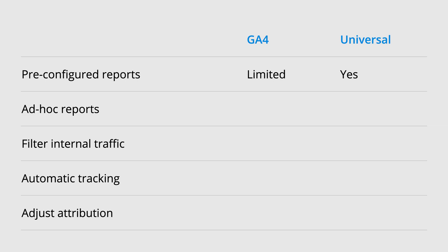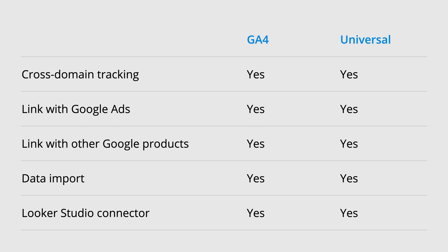Before we wrap up, let's cover key differences between GA4 and Universal Analytics. GA4 has a limited number of pre-configured reports, while Universal Analytics has a wider range of standard reports. GA4 introduces more ad-hoc reporting options to meet your needs. You can filter out internal traffic in both versions of Analytics. GA4 includes automatic tracking of important actions, while Universal Analytics doesn't. And you can adjust the attribution model used for the standard reports in GA4. Features available in both versions include cross-domain tracking, which is actually easier in GA4, linking to Google Ads and other Google products, importing additional data into reports, and connecting Google Analytics to Looker Studio, previously called Google Data Studio.